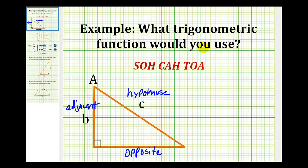So if we want to use a trig function that involves angle A, the length of side B, and the length of side C, we would have to use the cosine function, because cosine of an angle is equal to the ratio of the length of the adjacent side to the hypotenuse. So in this example, the cosine of angle A is equal to the ratio of B to C.